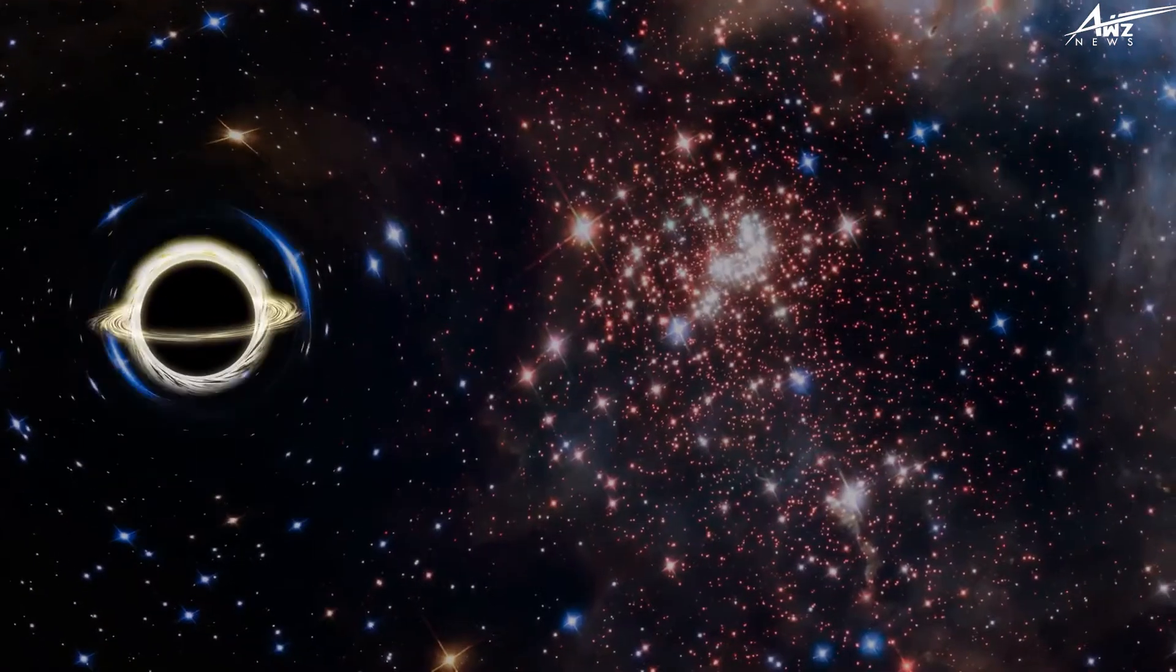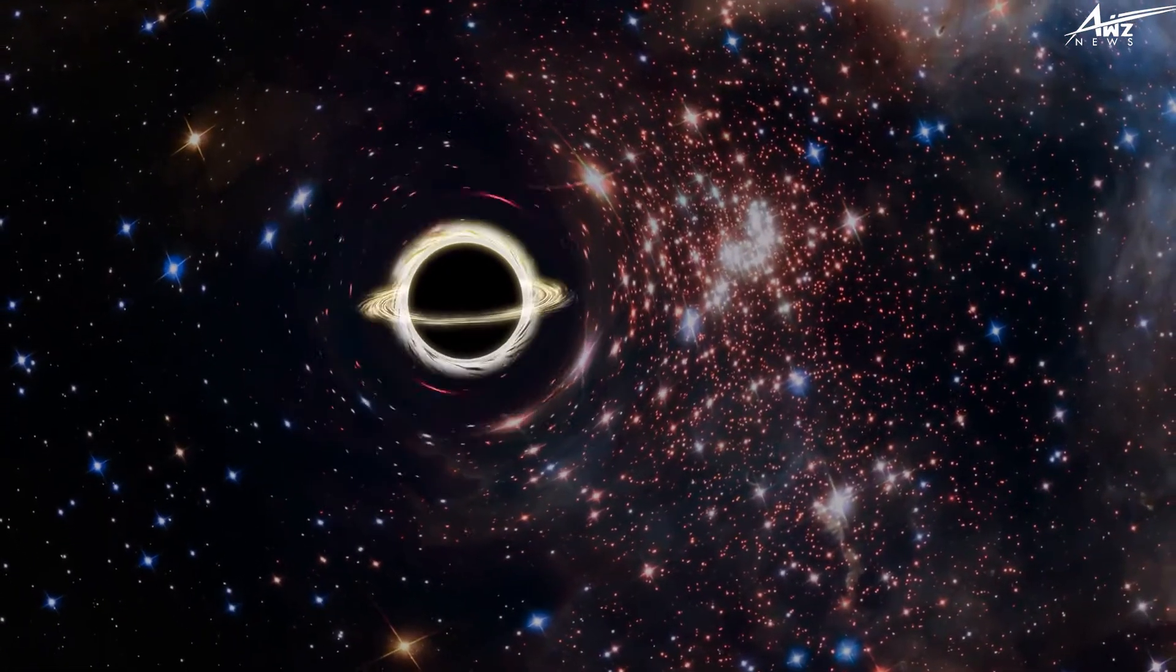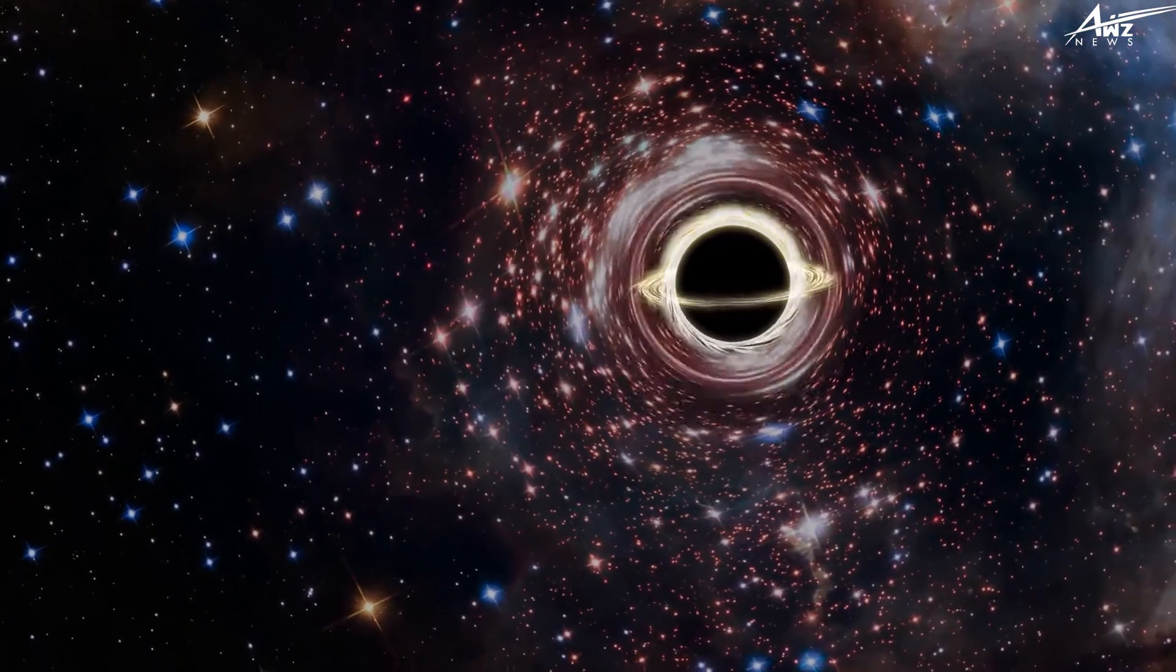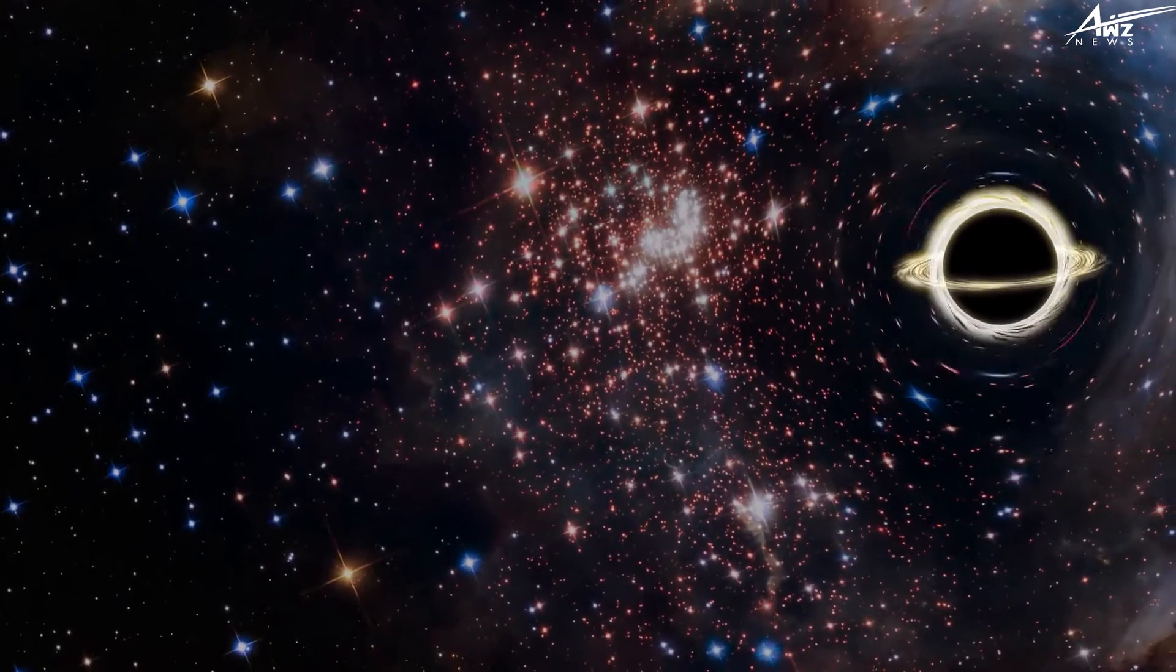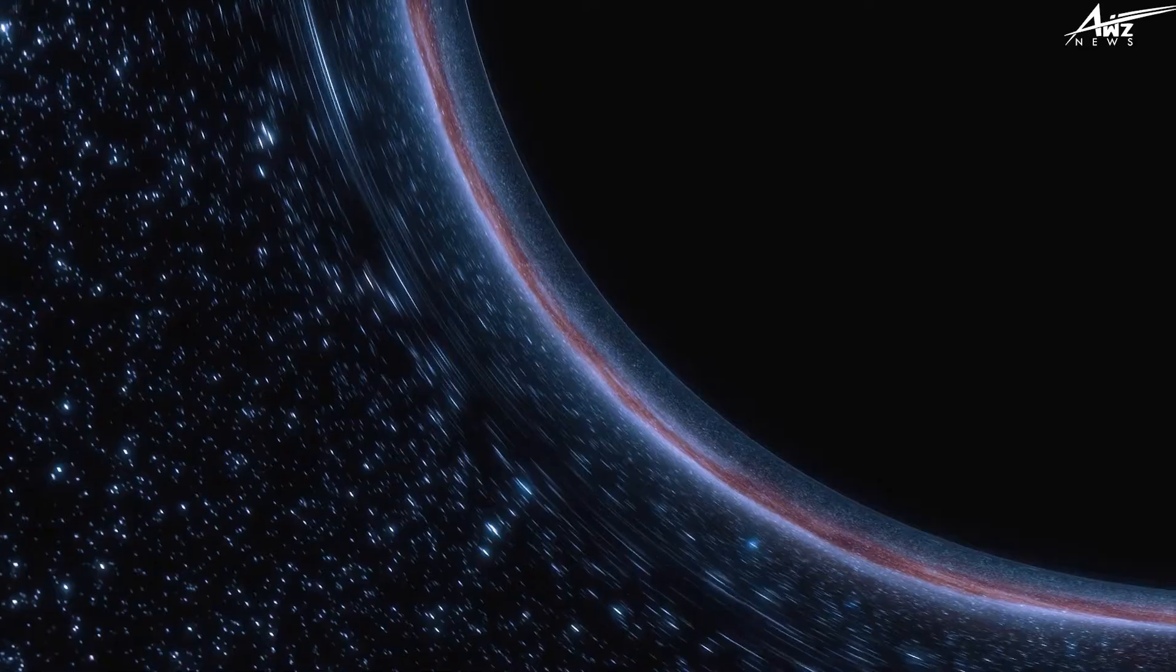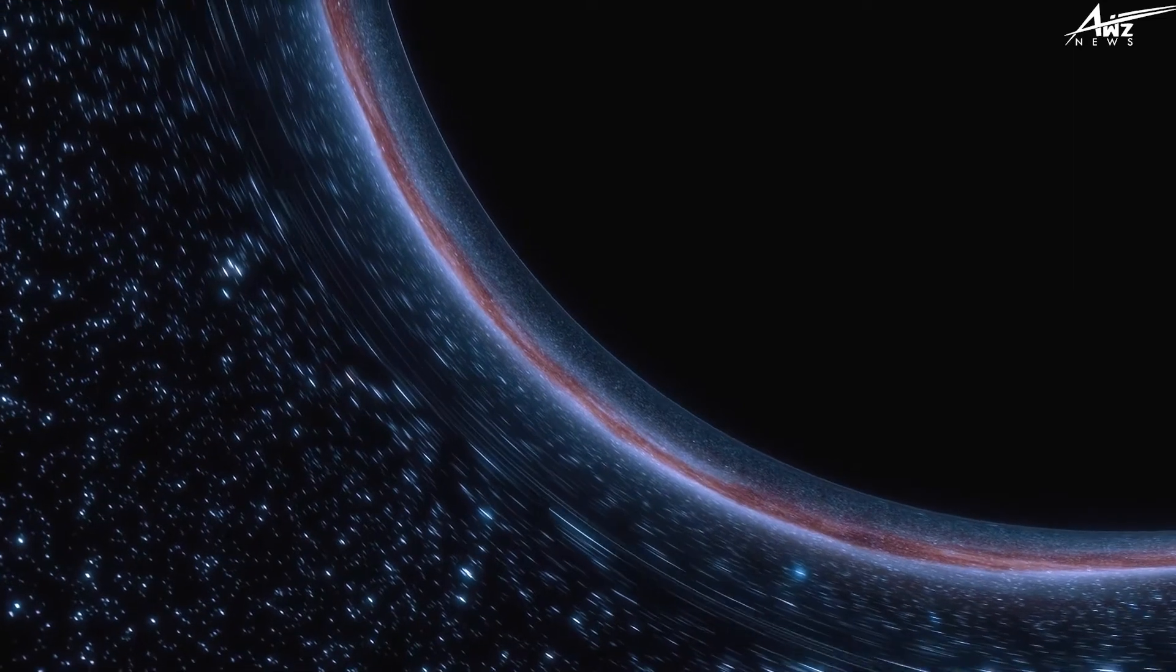For instance, a black hole that researchers have detected in the far-off galaxy M87 is around the size of our solar system. Its mass exceeds that of the sun by 6.5 billion times.